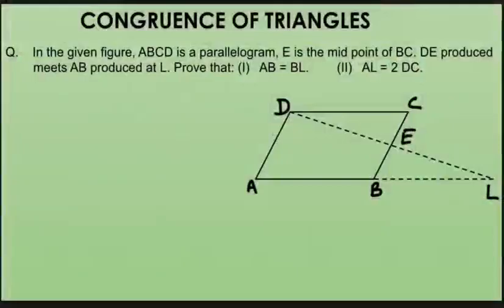In the given figure, ABCD is a parallelogram. E is the midpoint of BC. DE produced meets AB produced at L. Prove that AB equals BL, and AL is twice DC.